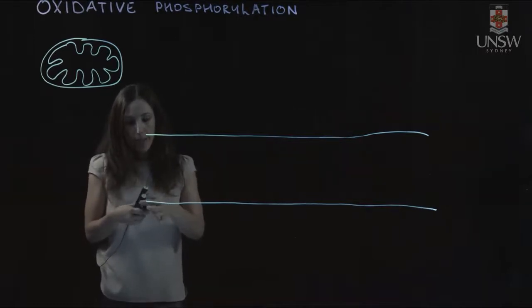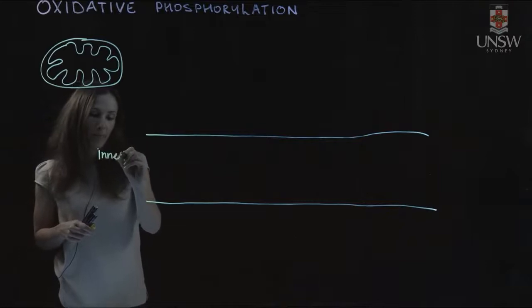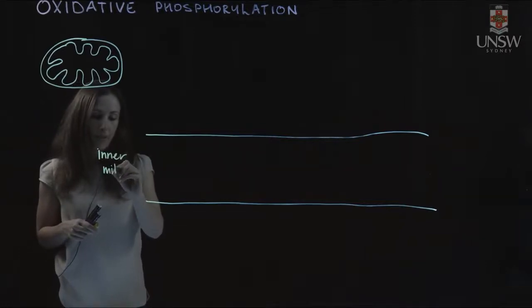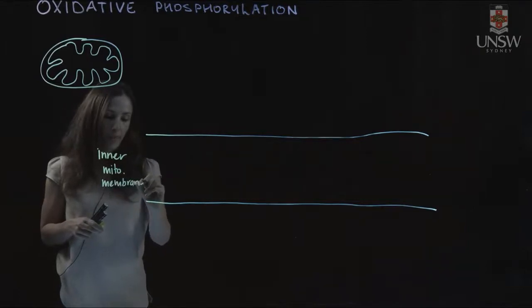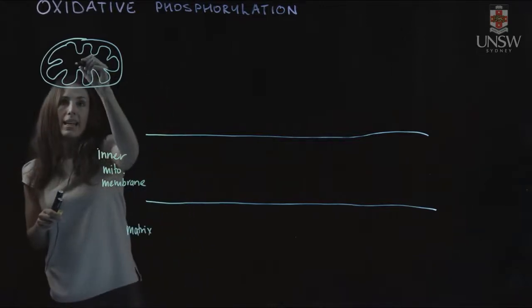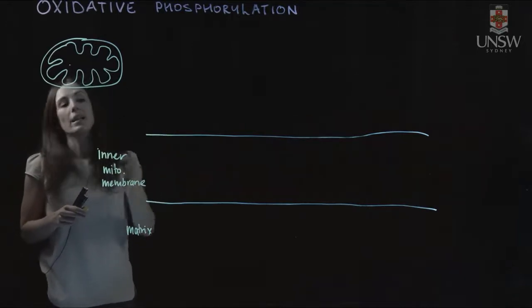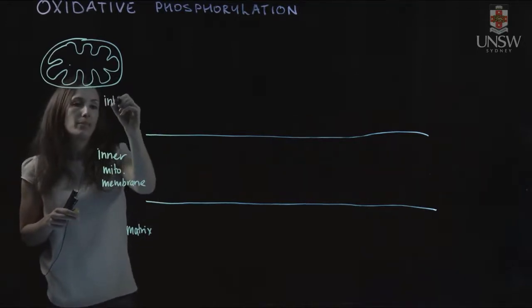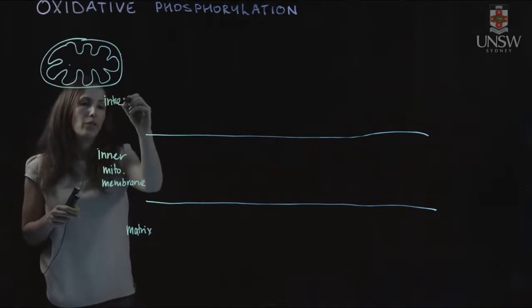Here we have our inner mitochondrial membrane. Down here we have the mitochondrial matrix, which is the part inside the mitochondria. Out here is our intermembrane space, which is the space between the inner and outer membrane of the mitochondria.